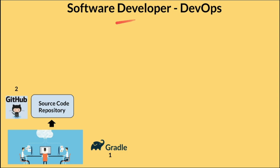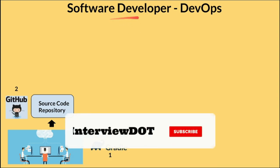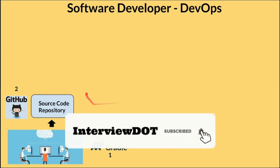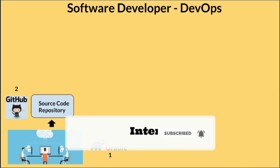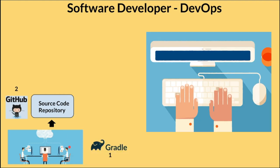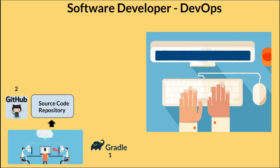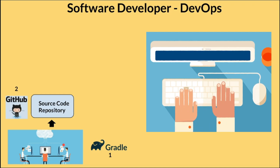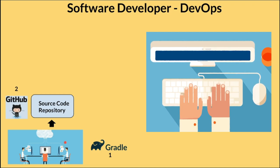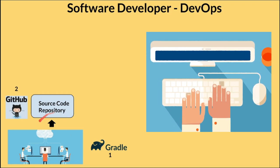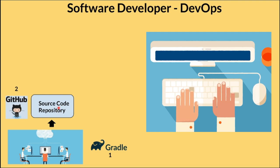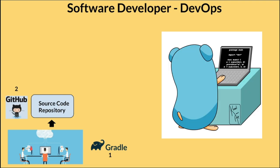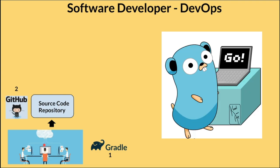In this video I'm going to share some steps to move from software developer to a DevOps engineer. As a software developer, I'll be part of a team — my responsibility would be to design the application, create tasks, implement features for front-end or back-end, manage the code, and push it to the code repository. This is what I'll be doing day in and day out as a software developer.